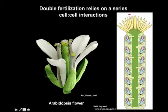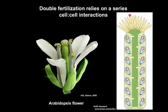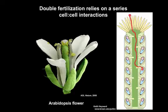Consider the journey of a single pollen tube as depicted in this cartoon Arabidopsis pistil. It interacts with several female cell types as it germinates on the stigma, enters the transmitting tissue of the style, turns out onto the ovary surface, grows up a funiculus, enters an ovule micropyle, contacts a synergid cell, and bursts to release its content of two sperm cells, which fuse with the female gametes, the egg and central cell, to produce an embryo and endosperm within a developing seed.